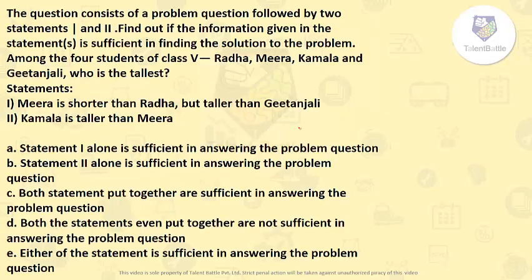The question consists of a problem question followed by two statements 1 and 2. Find out if the information given in the statements is sufficient in finding the solution to the problem. Among the four students of class 5, Radha, Meera, Kamala and Gitanjali, who is the tallest?